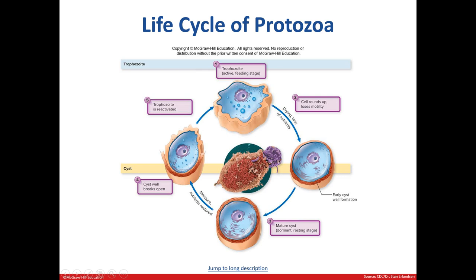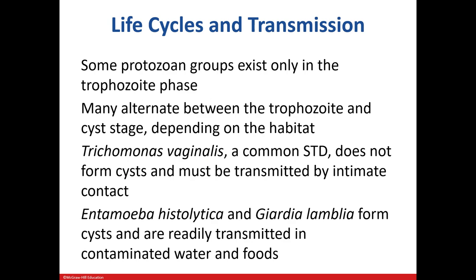Here we see the trophozoite, or feeding stage. After they lose moisture, they transition to the cyst stage and remain dormant. Once moisture and nutrients are available, the wall of the cyst breaks open and the trophozoite is reactivated. Sometimes an organism may only exhibit the trophozoite stage, and sometimes they rotate between the two. Trichomonas vaginalis, a sexually transmitted disease, only exists in the trophozoite form, so intimate contact is required for transmission. Entamoeba histolytica and Giardia form cysts, so they can easily be transmitted via water and food.